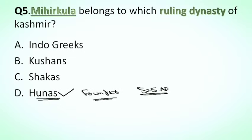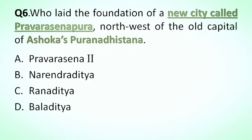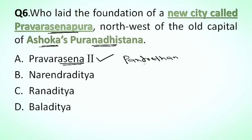Our next question is: who laid the foundation of a new city called Pravarsena Pura, northwest of the old capital Ashoka Pura? Options: A. Pravarsena II, B. Narendraditya, C. Ranaditya, D. Baladitya. The correct answer is option A, Pravarsena II. He laid the foundation of Pravarsena Pura, which is present-day Srinagar city. Ashoka laid the foundation of Ashoka Pura, now known as Pandritan, located near Srinagar.